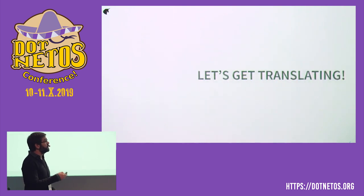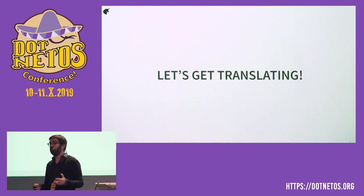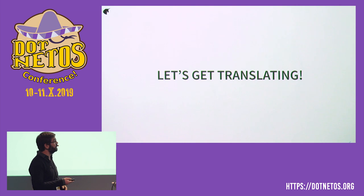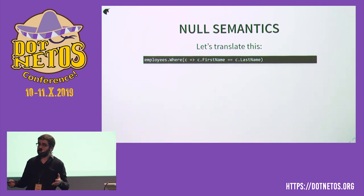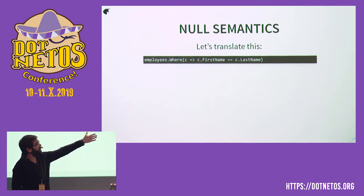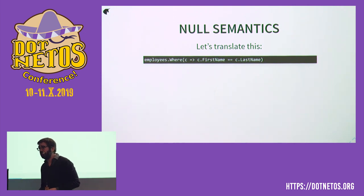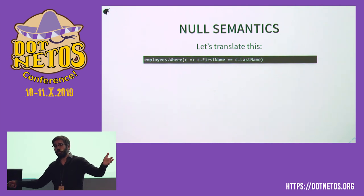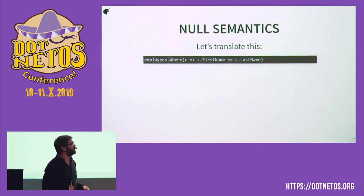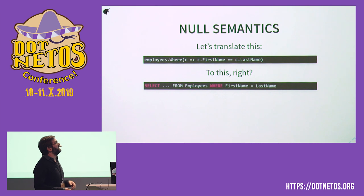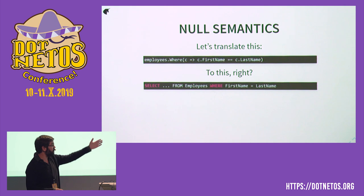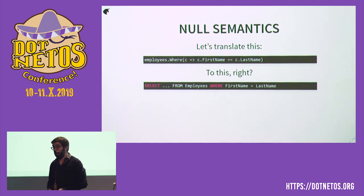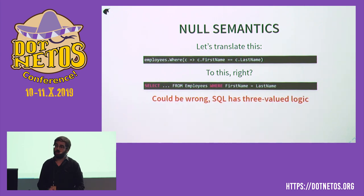I want to jump right in and start talking about some problems when we translate from the world of LINQ to the world of SQL. Let's look at something very simple — null semantics. If you have this LINQ query, we have employees and a where operator, comparing first name to last name — searching for employees with an identical first and last name. A naive SQL translation would be: SELECT from employees WHERE first_name = last_name. This is wrong. It's a very typical beginner's mistake. SQL has what's called three-valued logic. In normal C# you've got true and false, but in SQL you've got true, false, and null. Comparing first name to null will never give you true, even if first name indeed is null. It will give you null. This is why you have a specific operator for testing if something contains null.